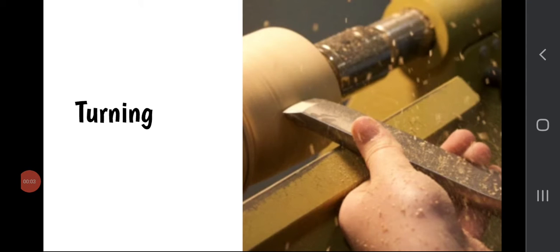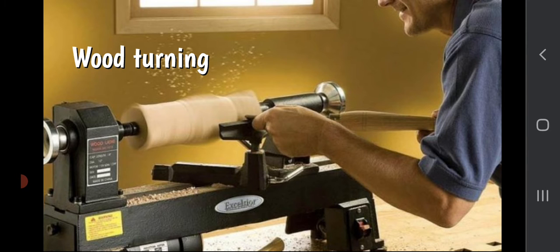This is National 5 Design and Manufacture and in this lesson we're going to look at turning - how you turn cylindrical shapes in wood and metal. We'll cover the tools involved and the various steps we have to go through to set up so that we can turn accurately and safely. Let's get started and begin by looking at wood turning.